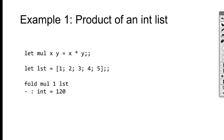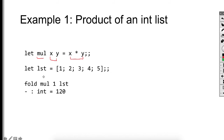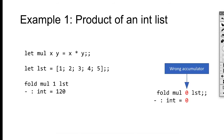Now let's look at some examples of fold. The first example calculates the product of an integer list. Just like the sum of a list, we have a function mul that takes two integers and calculates their multiplication. If we apply fold with function mul, accumulator one, and a list of one, two, three, four, five, we get 120. You should be careful — the accumulator cannot be zero in this case, otherwise the entire result will become zero.